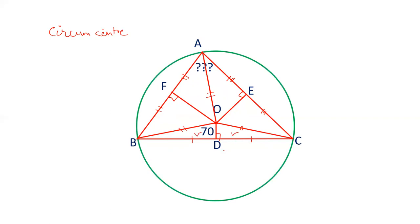Now, these two triangles are congruent because BD is equal to DC. OD is common and this angle is 90 degrees because it is perpendicular. So, triangle OBD is congruent to triangle OCD. And therefore angle COD is also 70 degrees by corresponding parts of congruent triangles, CPCT.